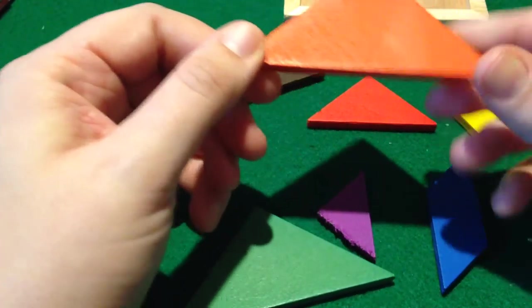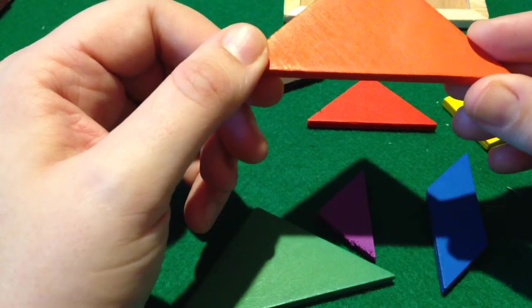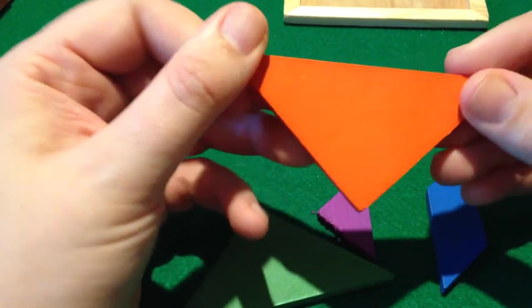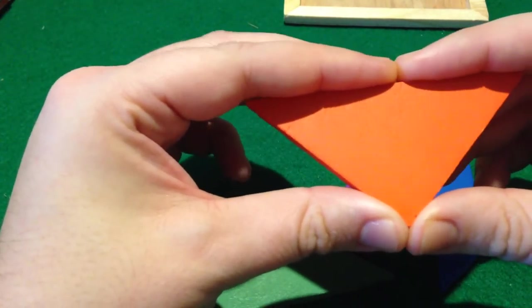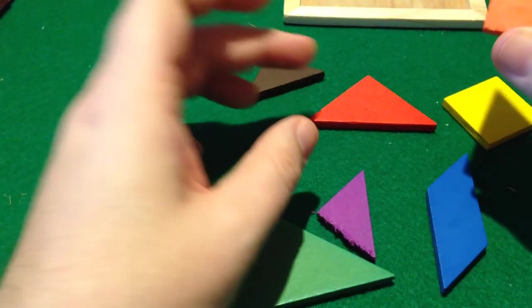Apparently the pieces themselves are called tans, but the gram part of the name, nobody seems to really know. There's something about it being part of a Greek alphabet, but I don't see the connection myself.